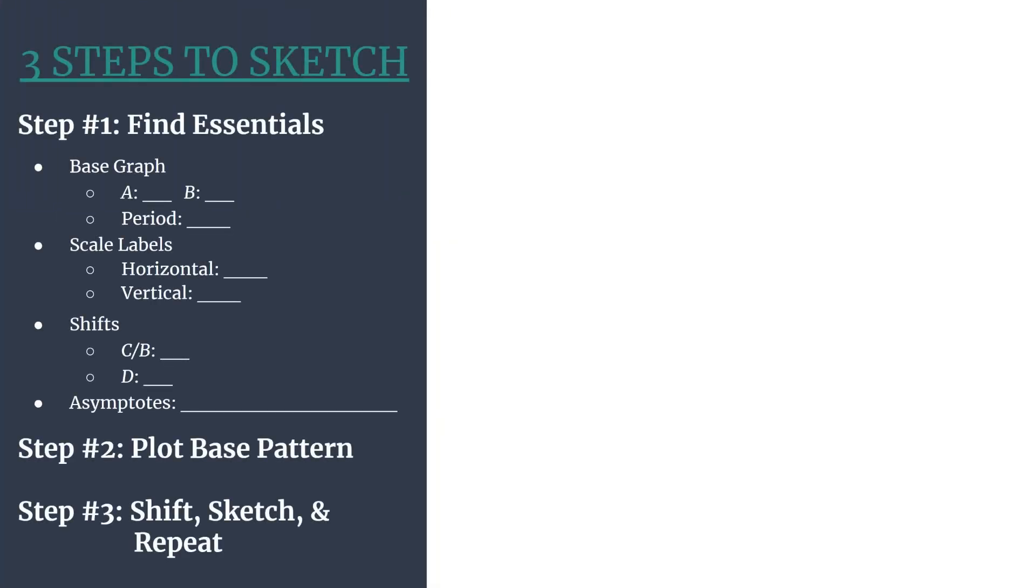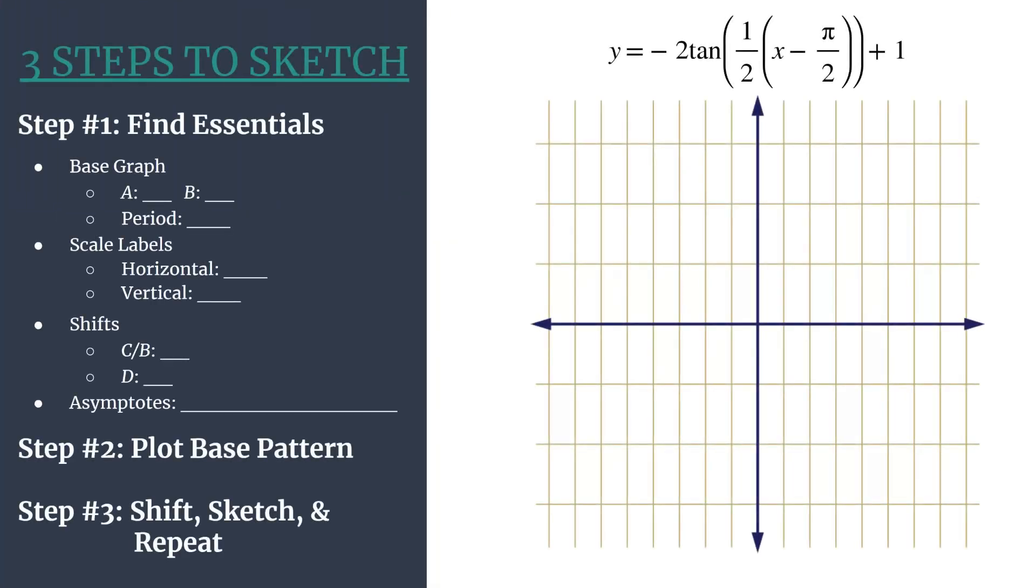Y equals negative 2 tangent of 1 half x minus pi over 2 plus 1. So here's our method template and our equation and grid. And before we get started, let's write out the general form of a shifted tangent equation.